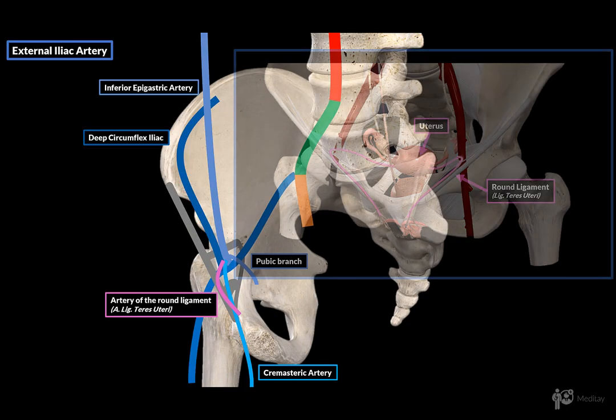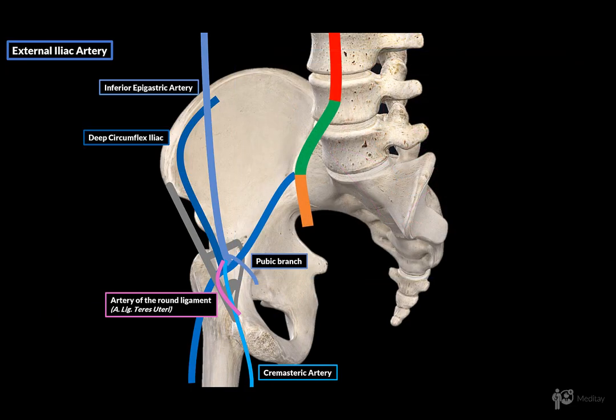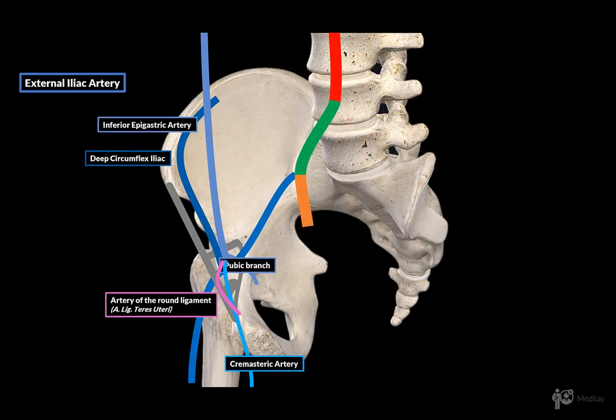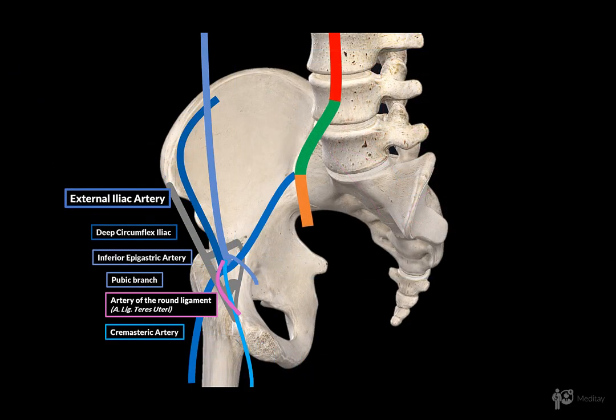That's all for the external iliac artery. As long as you remember these two side branches, you've more or less got a grasp of the external iliac. Next let's do the internal iliac artery.